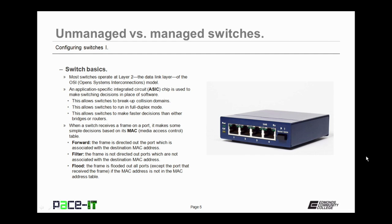The ASIC chip is used to make switching decisions in place of software. This allows switches to break up collision domains, run in full duplex mode, and make faster decisions than either bridges or routers. When a switch receives a frame on a port, it makes simple decisions based on its MAC table: it may forward the frame, filter the packet, or flood the frame out all ports except the one it came in on.